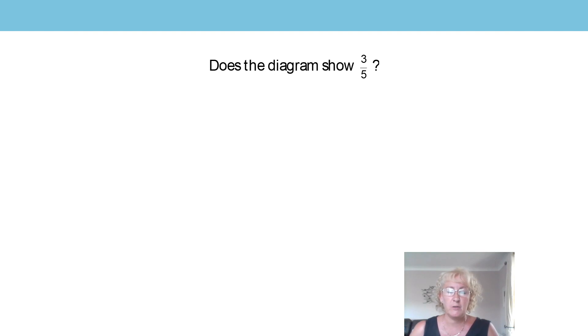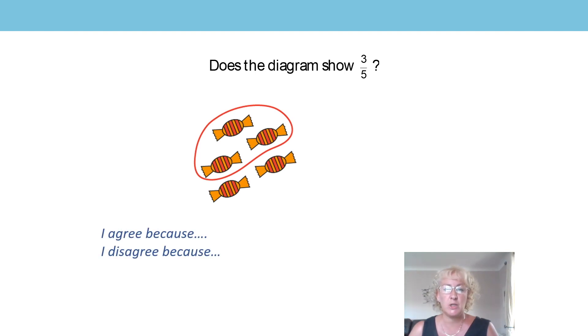Let's try a few more of these now. Remember to use your stem sentence to help you reason and I'm going to show you some representations and I want you to agree or disagree if they represent three fifths. Let's go through that sentence together. The whole is made up of five equal parts and three of the parts are ringed so that is three fifths of the whole. So yes, that representation does show three fifths.